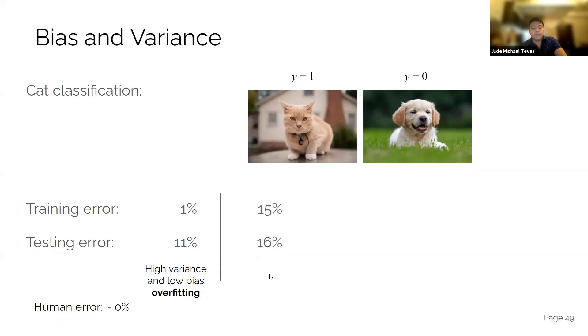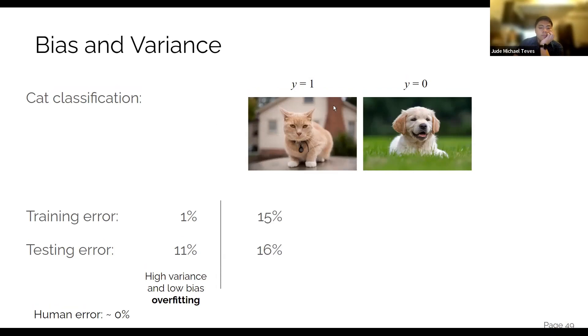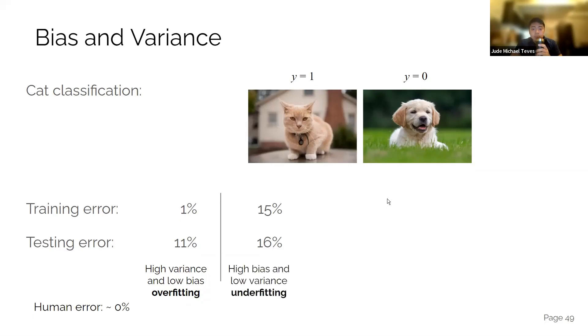What about this one? What do you think? Again, the human error is zero. So what is this? High bias or low bias, high variance or low variance, based on what I just said? What do you think, guys? So it's high bias, low variance. Yes, it's high bias, low variance. That is underfitting.